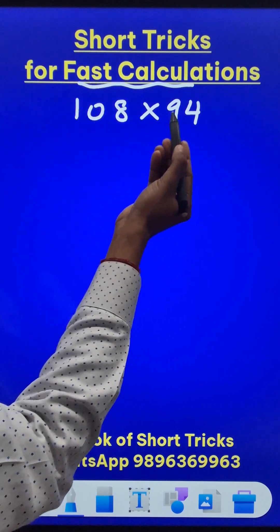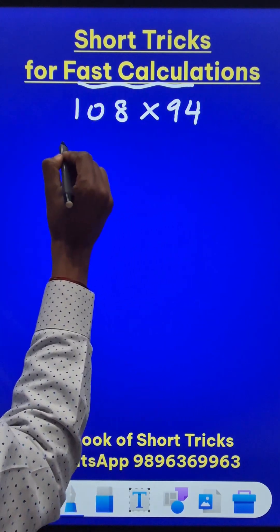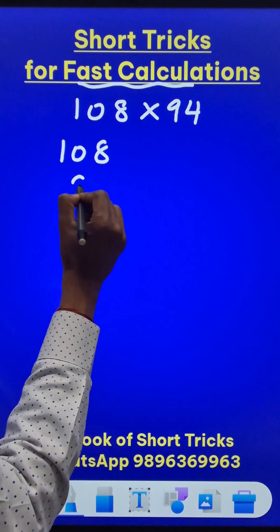One of them is more than the base number and the other one is smaller than the base number. So what do you do in such cases? 108 and 94.